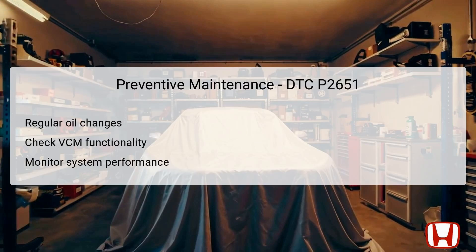Preventive maintenance is crucial in averting issues like the P2651 code from arising in the first place. Regular and timely oil changes are a primary factor, since clean oil ensures optimal lubrication and prevents clogging in hydraulic circuits. Furthermore, routinely checking the functionality of the Variable Cylinder Management System can detect potential issues before they escalate. Maintaining an eye on overall system performance and addressing any anomalies promptly can significantly reduce the risk of encountering similar DTCs. Committing to a comprehensive maintenance schedule greatly enhances the longevity and performance of the vehicle.